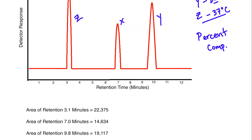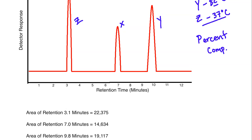Coming down here, if we take a look, we've got the area of retention for 3.1 minutes, the area of retention for 7.0 minutes, and the area of retention for 9.8 minutes. And they each have a value there. You can see the one that has the most area underneath the peak is going to be the one at 3.1 minutes, and that has approximately 22,375 there. The area for 7 is going to be the least, and then the area for the peak at 9.8 minutes is going to be right in between that.